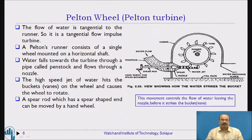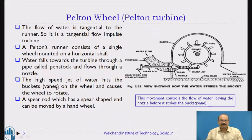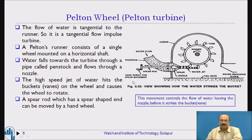Water falls towards the turbine through a pipe called the penstock, flows through a nozzle, and hits the blades. The high speed jet of water hits the bucket vanes. A spear rod which has a spear-shaped end can be moved by a hand wheel to control the flow.